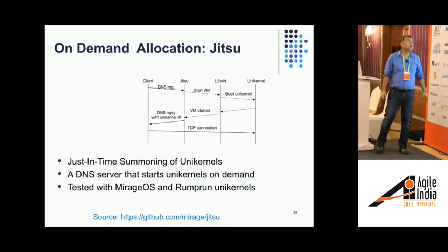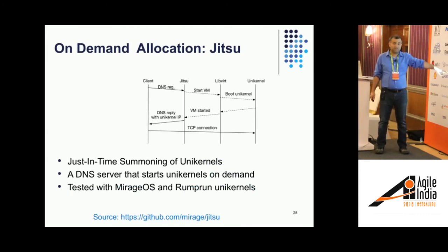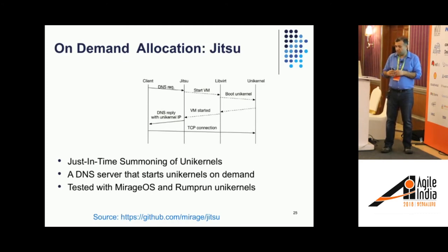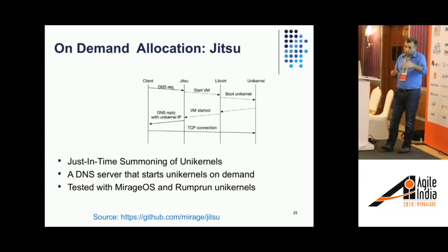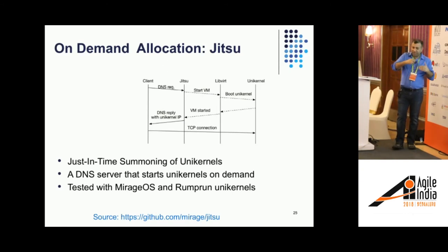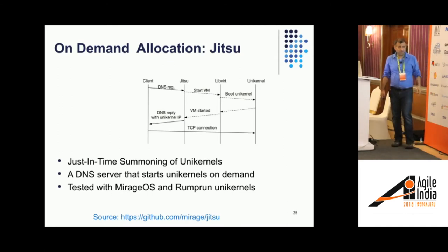There's a project called JITSU — just-in-time summoning of unikernels. As you get a request, you can just boot up a unikernel, process that request. There are all sorts of configurations — you can keep it alive, but if the request load drops and you don't need that many kernel instances, you can shut them down. The problem in a traditional environment is it takes a few seconds to boot up and shut down. Whereas in a unikernel, because the boot-up and shutdown process is really fast, you can do rapid scaling, downscaling and upscaling. The DNS server would start unikernels on demand — this has actually been tested on MirageOS.